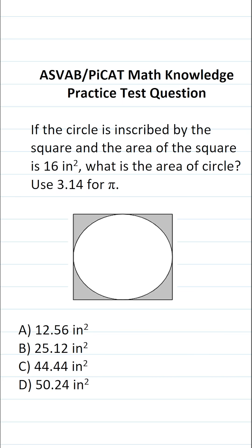So again, on the ASVAB and PiCAT, you're not given any reference sheets or calculators. So you do have to commit some basic formulas to memory. And in this case, we have to know how to find the area of a square and the area of a circle.